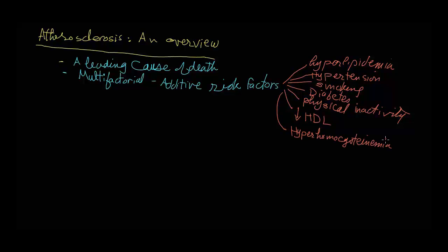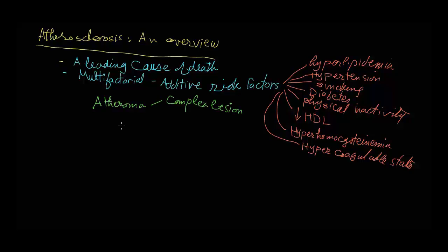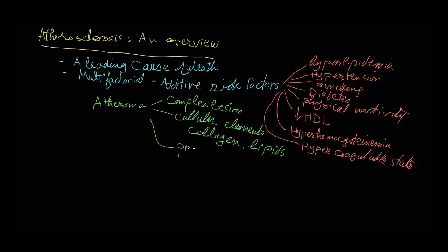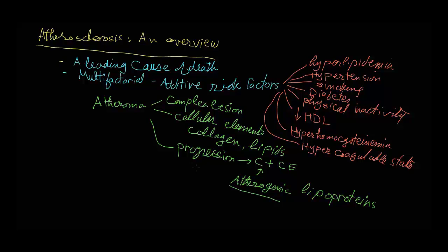Hyperhomocysteinemia and hypercoagulable states are also risk factors. A key word in relation to atherosclerosis is the word atheroma. Atheroma is a complex lesion associated with certain cellular elements, collagen, and certain lipids. Its progression is related to cholesterol and cholesterol esters.